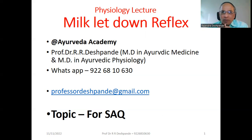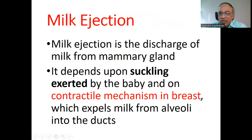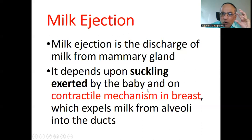Let us start to discuss milk let down reflex. Milk ejection is the discharge of milk from the mammary glands. It depends upon the suckling exerted by the newborn baby and on a contractile mechanism in the breast, which expels milk from the alveoli into the milk ducts.